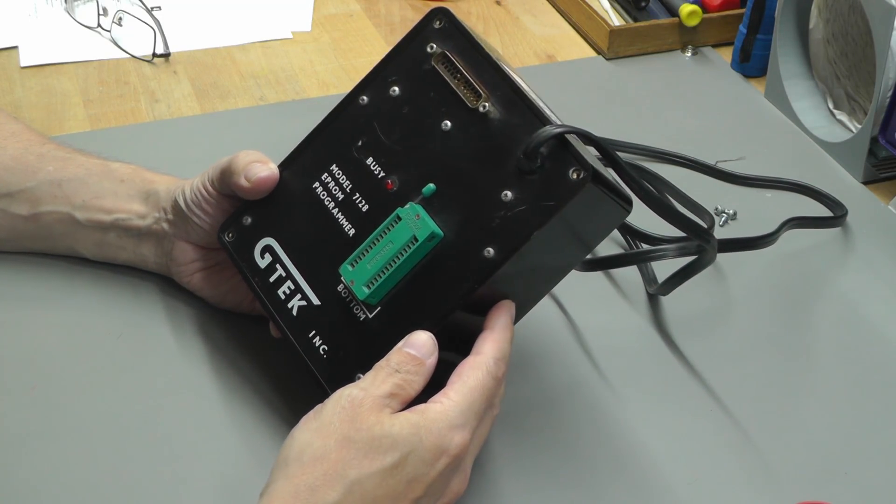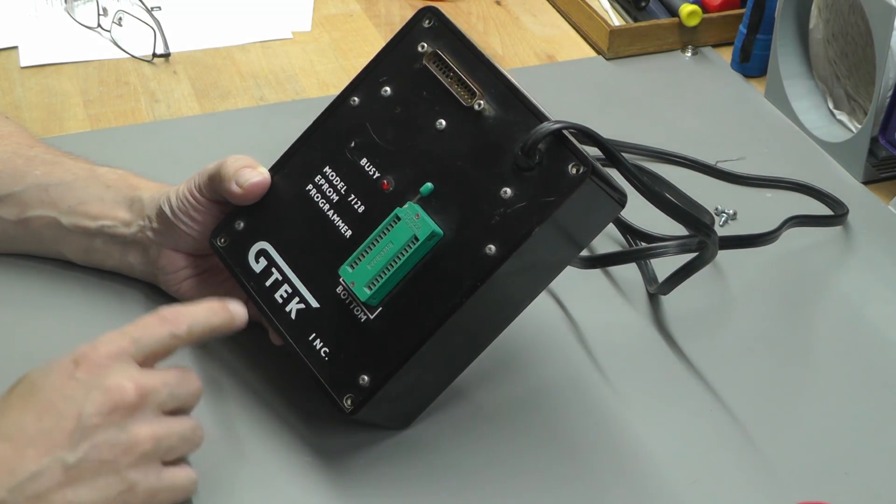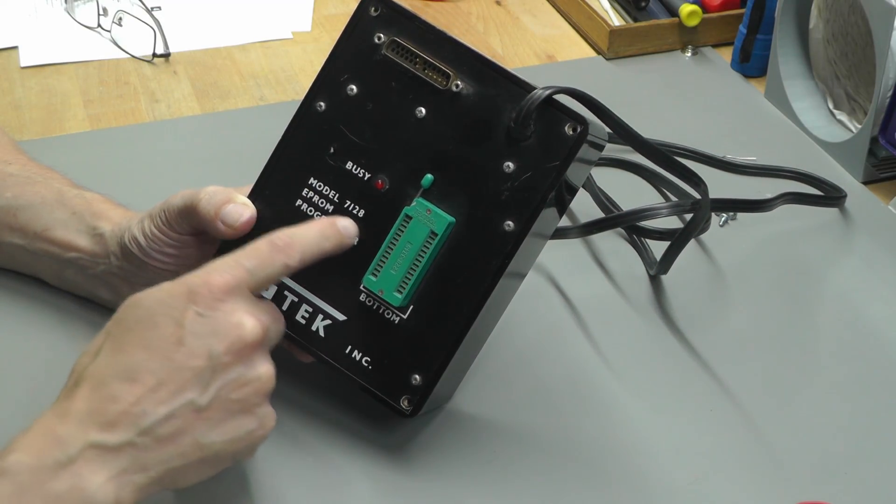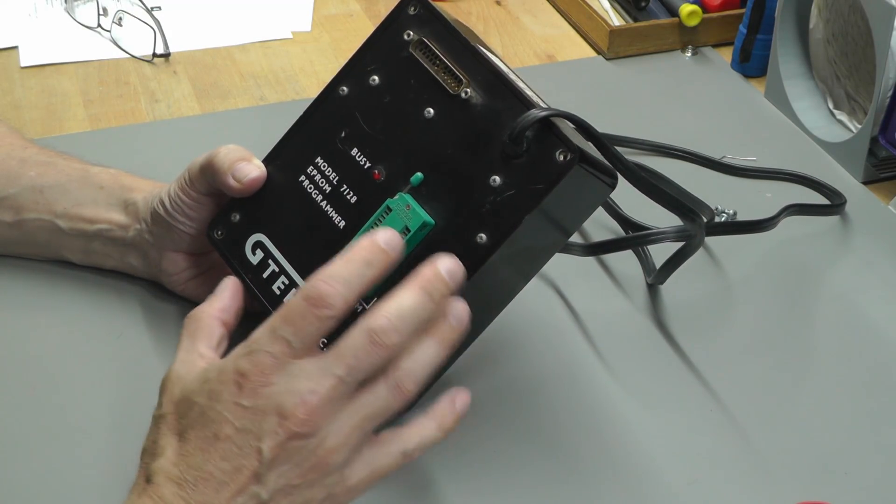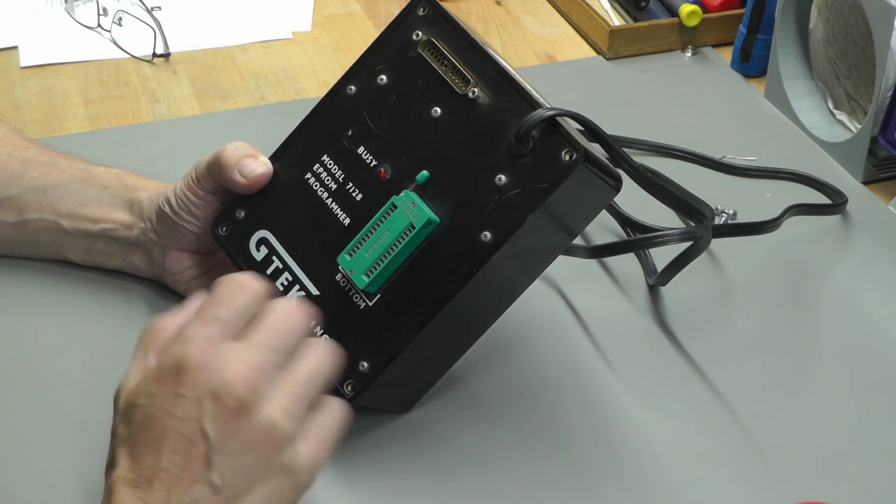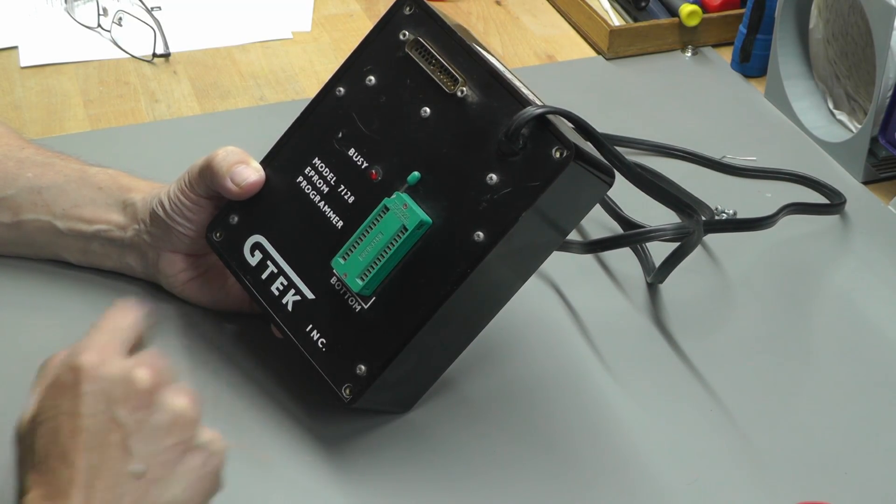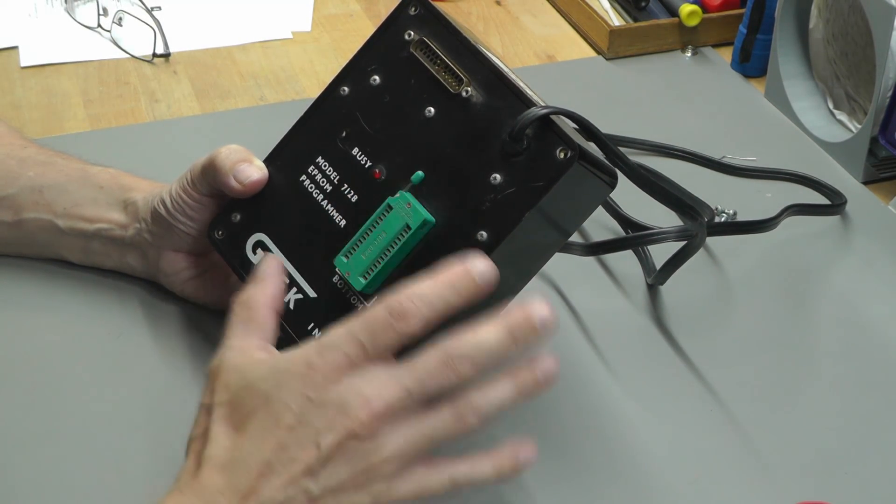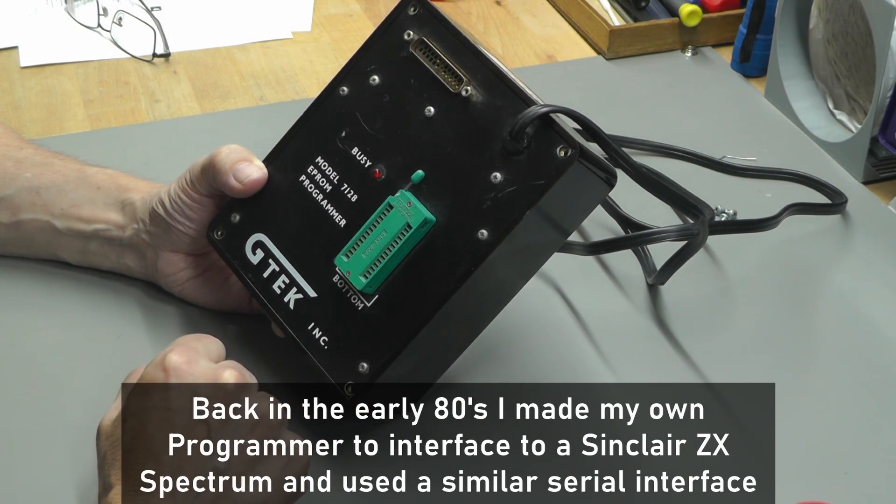Hi everyone, welcome back to the workshop. Today I've got something a little bit different. I've managed to pick up this GTech Model 7128 EEPROM Programmer. This thing dates from about the mid-80s, and the manual was last updated in 1988, so I presume it was on the go for a few years before that.